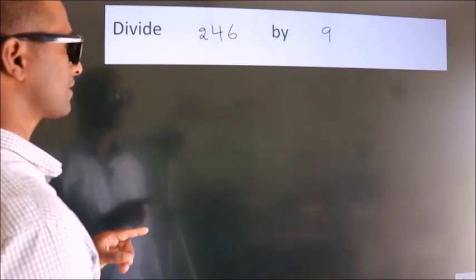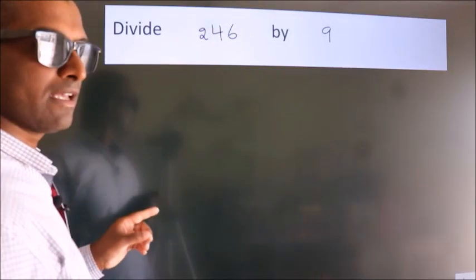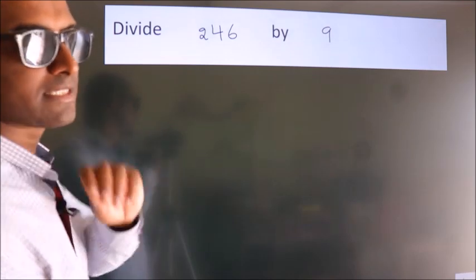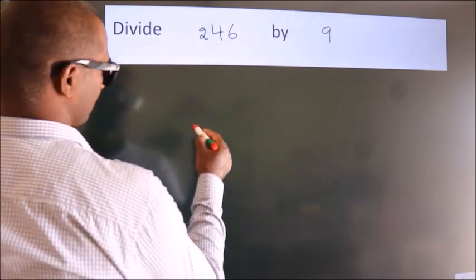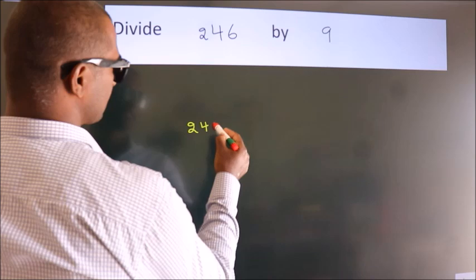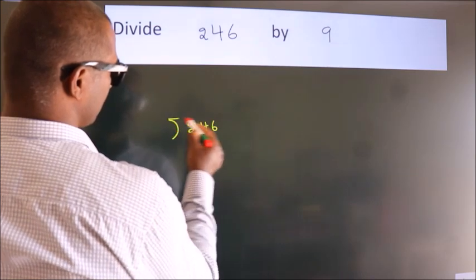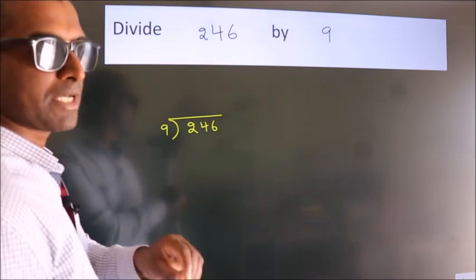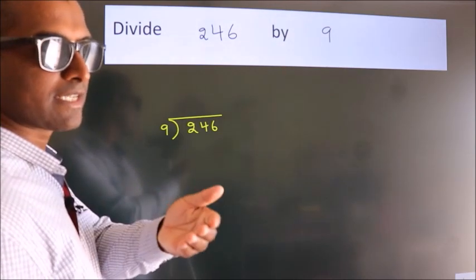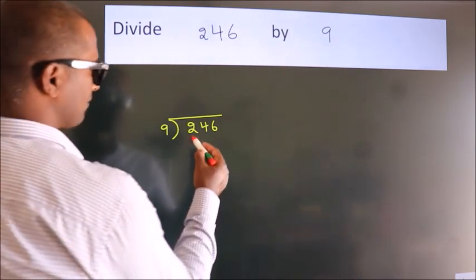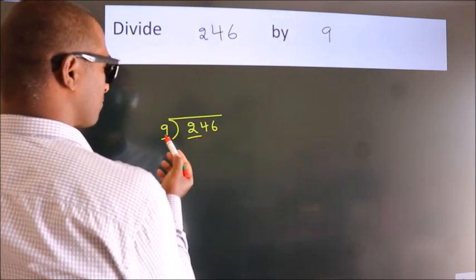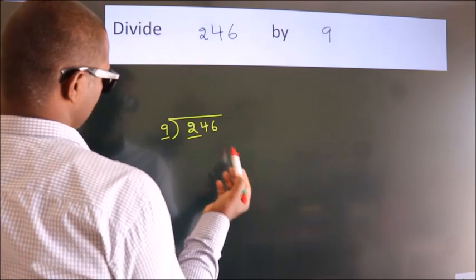Divide 246 by 9. To do this division, we should frame it in this way: 246 here, 9 here. This is your step one. Next, here we have two. Nine, two, smaller than nine, so we should take two numbers.